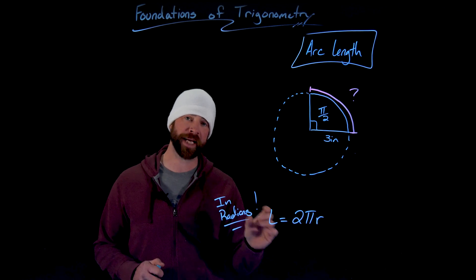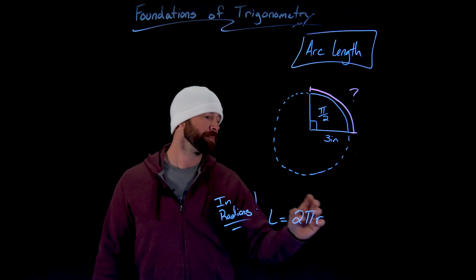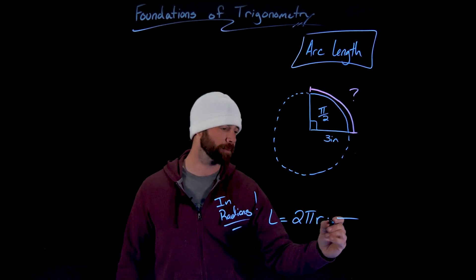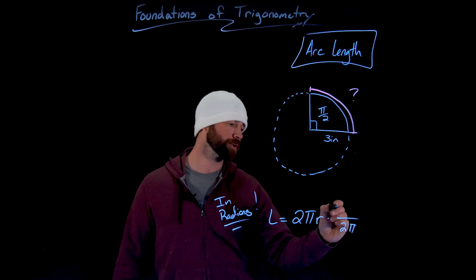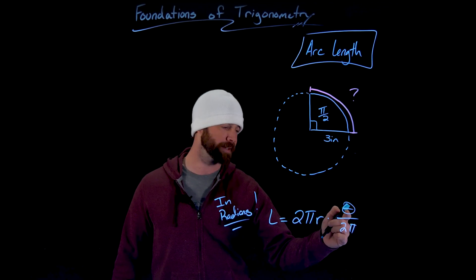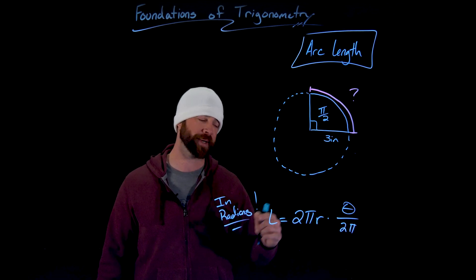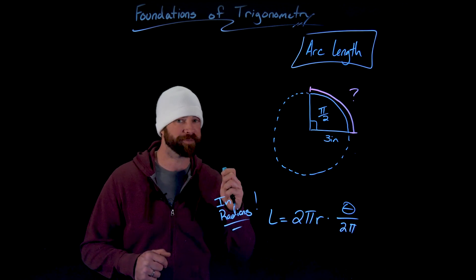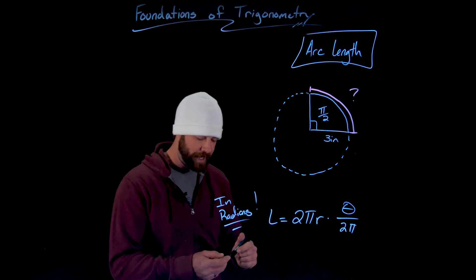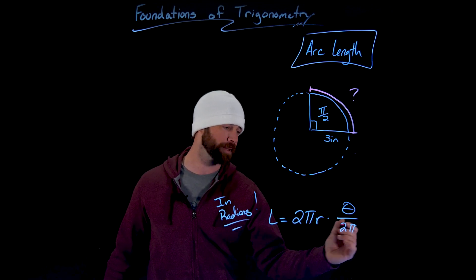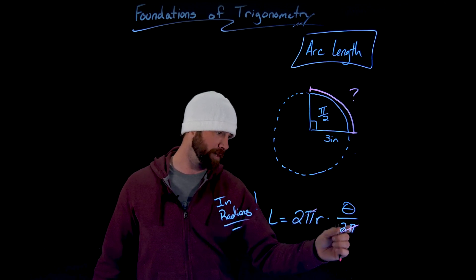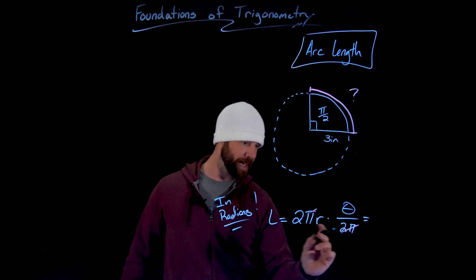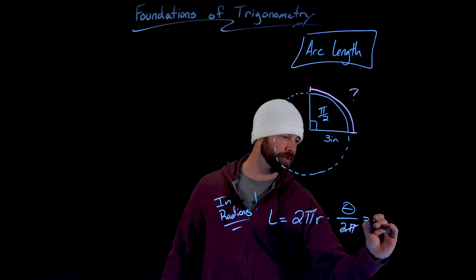This formula changes in a beautiful way. If we're in radians, a full circle is 2π. So we take the interior angle in radians and divide it by 2π to get the fractional piece. When we simplify, the factors of 2π in the circumference formula and in the fractional piece cancel out. This arc length formula reduces down to simply the radius times the angle.